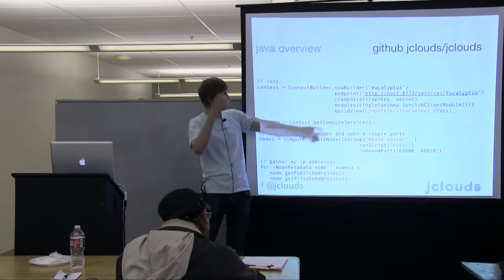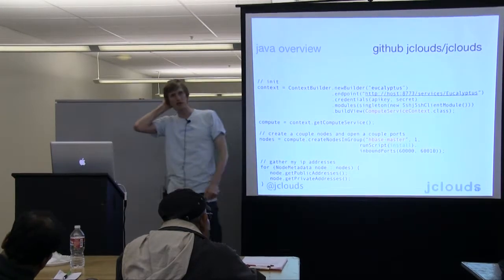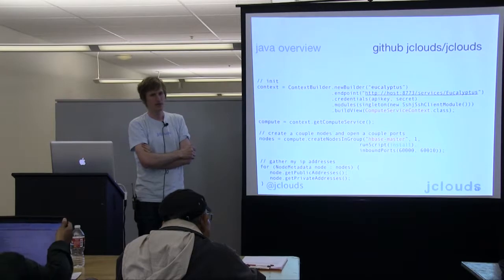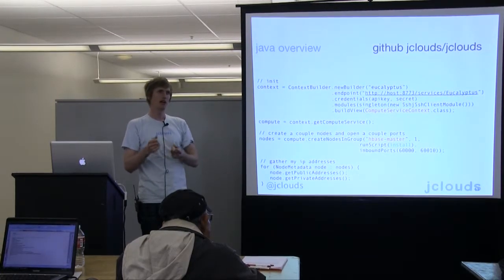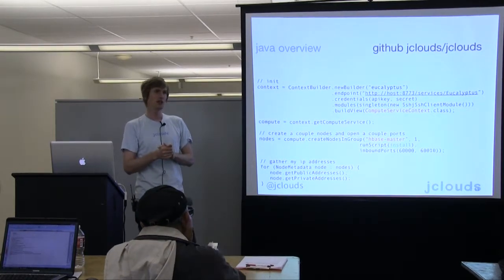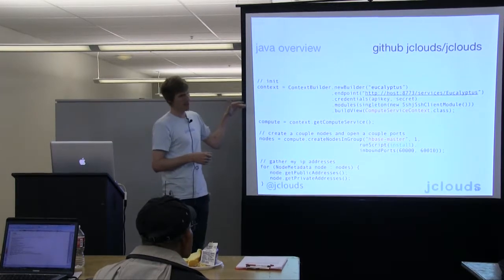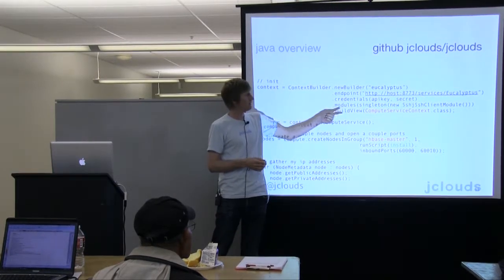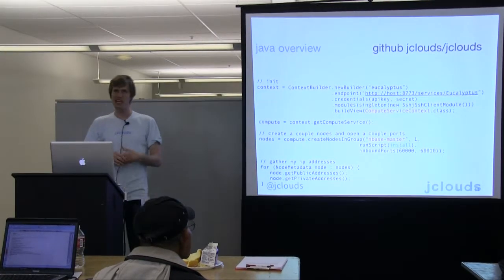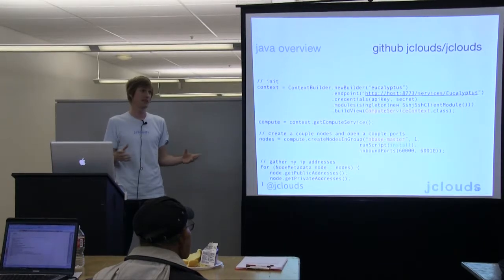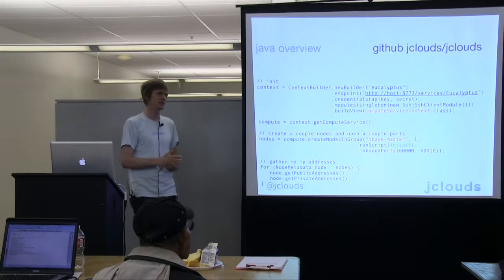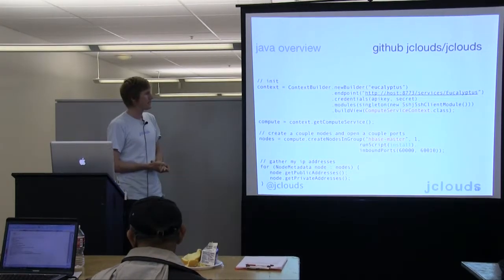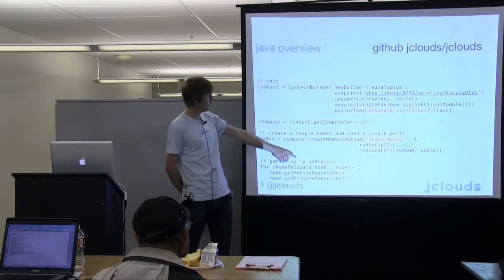This is fairly recent to JClouds 1.5 — we have build view. What we've noticed is that, for example, CloudStack has many views available on the same core API: load balancing, VM provisioning, VLAN allocation, and all sorts of other things. So with the same connection to the server, I can do compute node creation and deletion, and set up load balancers. We have this concept where one API is not necessarily bound to one functional set. Delta Cloud, for example, can support every view we have. Once you get there, you get a handle of the compute service, and when you create your nodes, you give it a group.